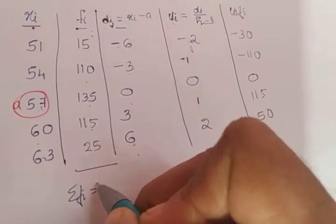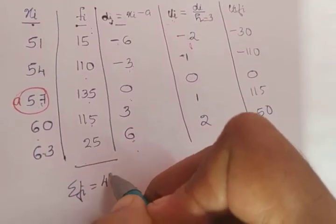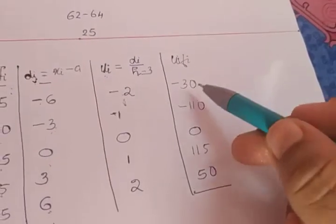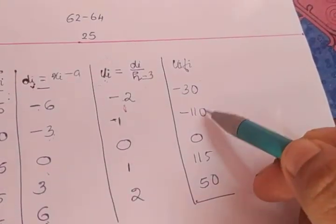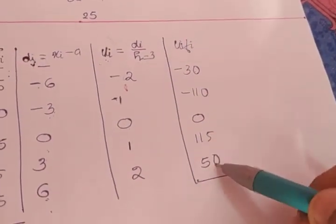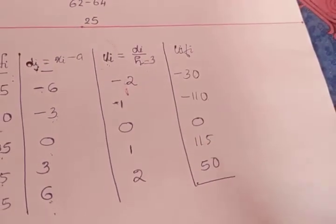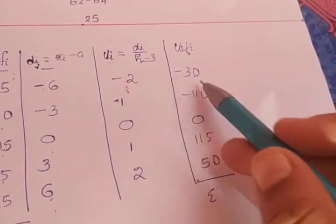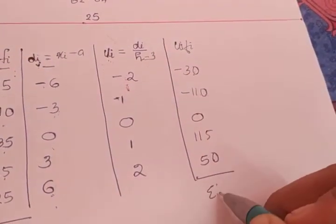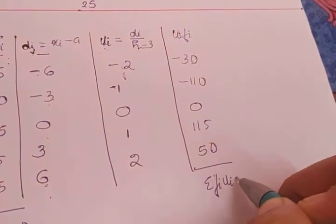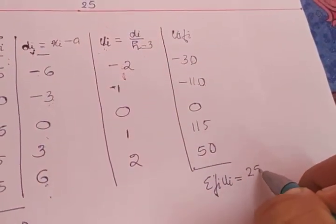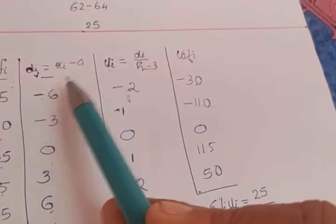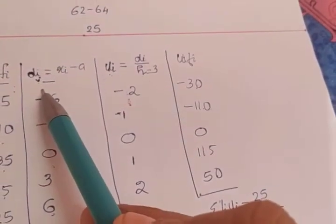Sigma fi is the sum of all fi values: 400. For sigma fi·ui: the negative values are −30 and −110, giving −140; the positive values are 115 and 50, giving 165. So sigma fi·ui = 165 − 140 = 25.